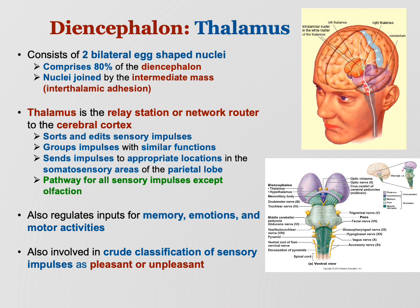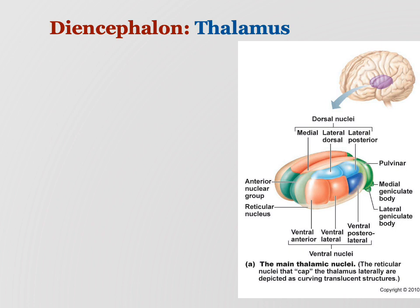The thalamus is also involved in crude classification of sensory impulses as pleasant or unpleasant. Mostly it's a router — it doesn't do a lot of its own interpretation, letting the cerebrum handle that. But in some cases you want immediate reactions to sensory input, and the thalamus can do some of that. For example, you open the fridge, smell something, and instantly react — that's probably your thalamus. More sophisticated interpretation of sensory signals happens in other parts of the brain.